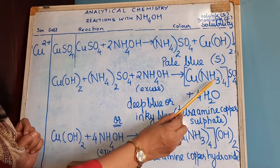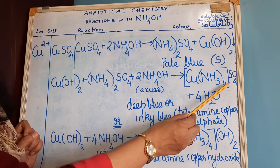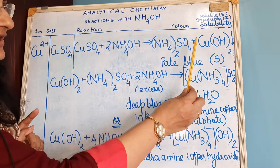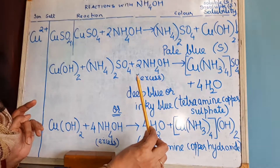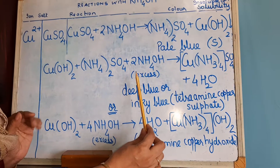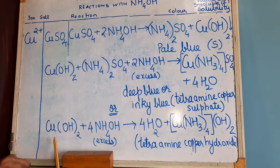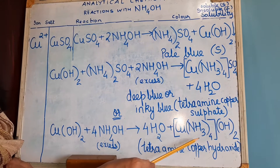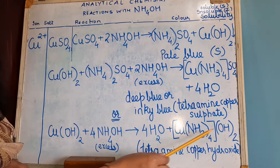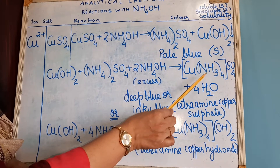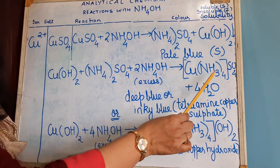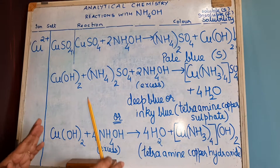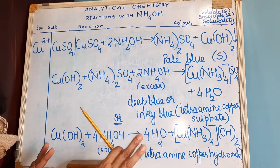In the first reaction the complex is tetraamine copper sulphate. Why? Because we are taking the products of the earlier reaction and adding excess of ammonium hydroxide. In the second, only the precipitate is reacting with excess of ammonium hydroxide. So our complex becomes tetraamine copper hydroxide, whereas in the first the complex is tetraamine copper sulphate. Understand the difference — the reactions are also very simple to remember.